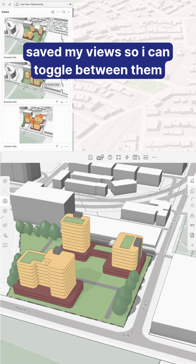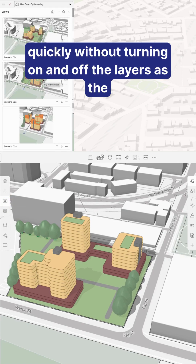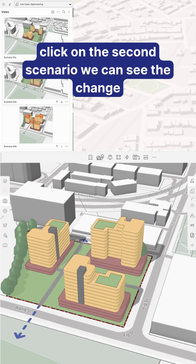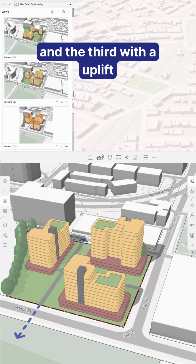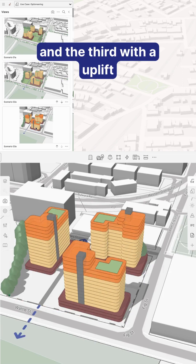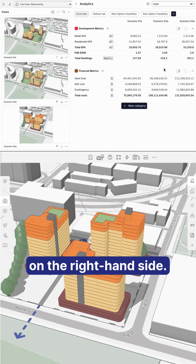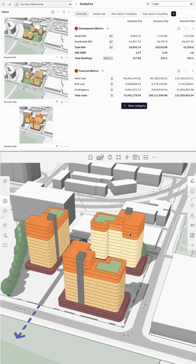If I navigate to Views, I've previously saved my views so I can toggle between them quickly without turning layers on and off, as the layer state is saved to the view. If I click on the second scenario we can see the change, and the third with an uplift there, along with the relevant metrics for each of those scenarios on the right hand side.